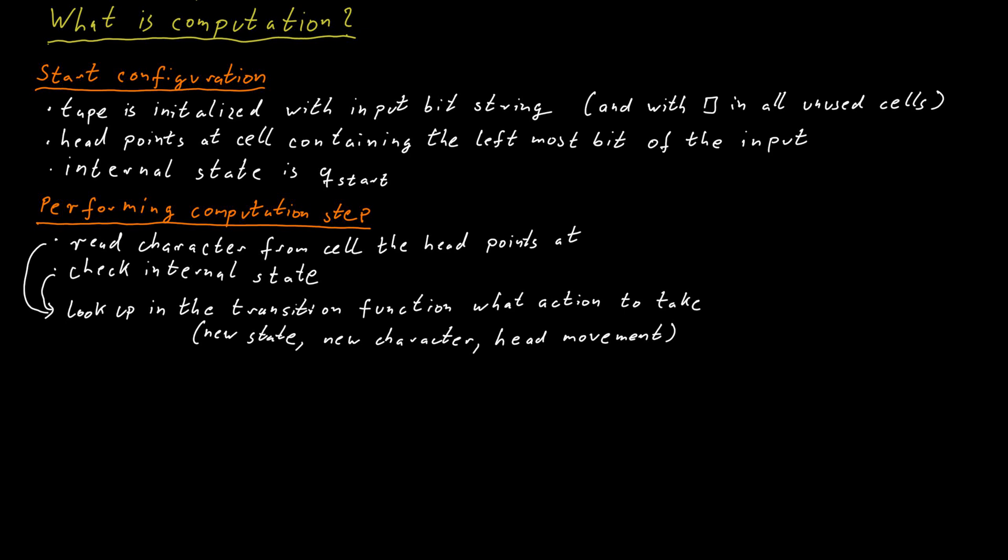The computation overall stops once the Turing machine enters a particular halting state. So let's call a particular internal state Q end and let's specify that that is the halting state. So once the Turing machine switches its internal state to Q end, it indicates that the Turing machine has finished its computation and is terminating.